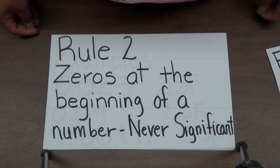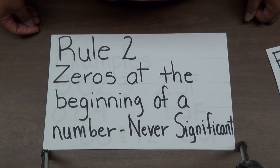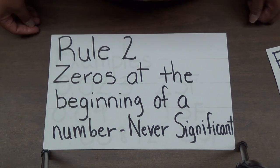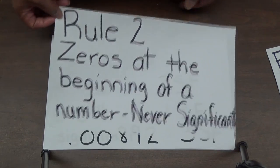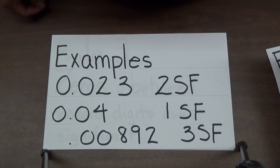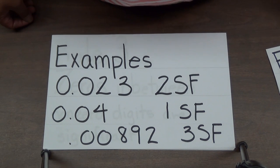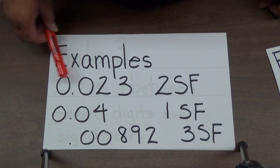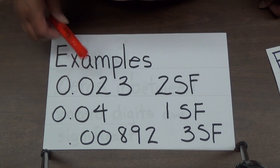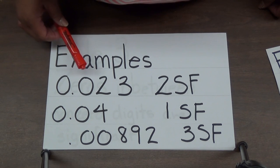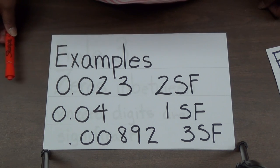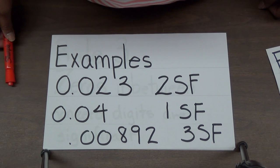Rule number two deals with zeros. Zeros at the beginning of a number are never, ever, ever significant. For example, 0.023 — there are two zeros at the beginning of that number. Even though there's a zero behind the decimal, it is not significant. There are only two significant figures in the number 0.023.